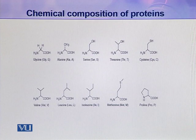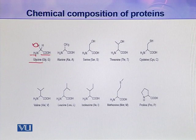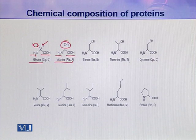Looking at the structures of different amino acids: glycine has one carboxylic group, one amino group, one hydrogen, and the R group is also hydrogen — making it the simplest amino acid. Alanine again has one carboxylic group, one amino group, and the R group is a methyl group, making it another simple amino acid.